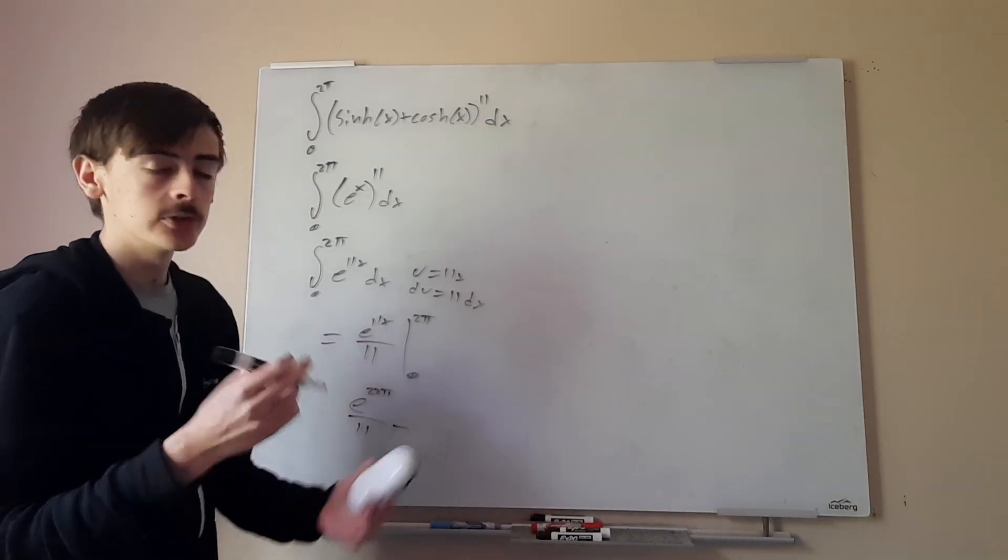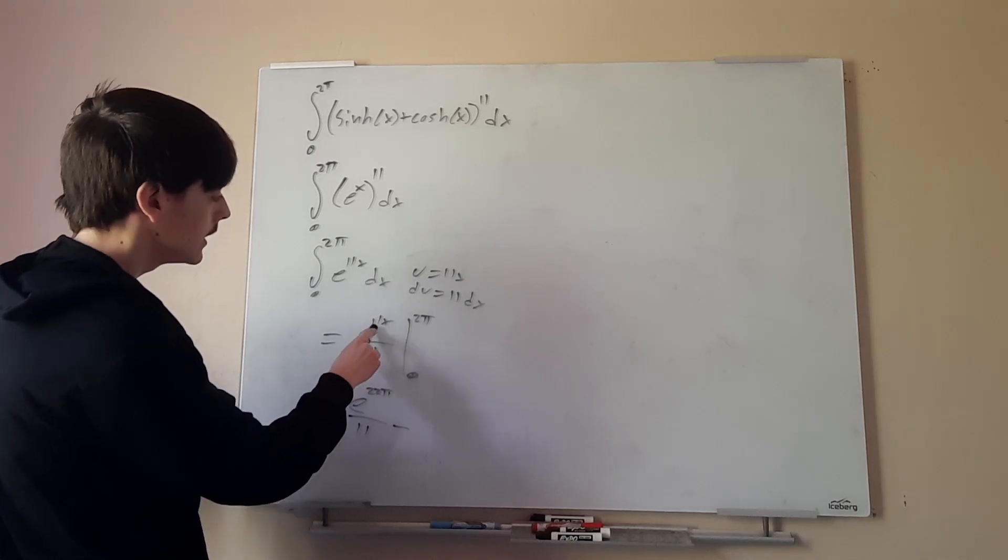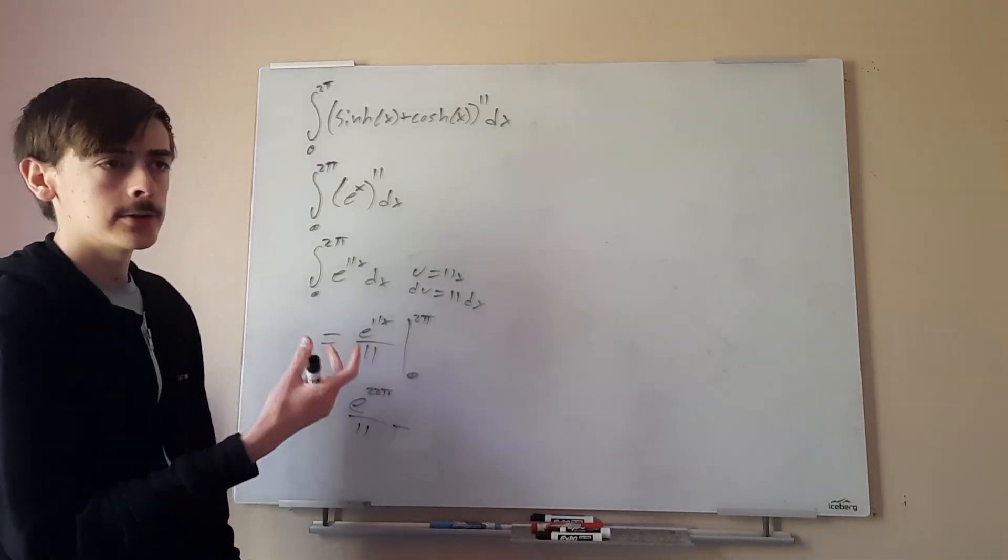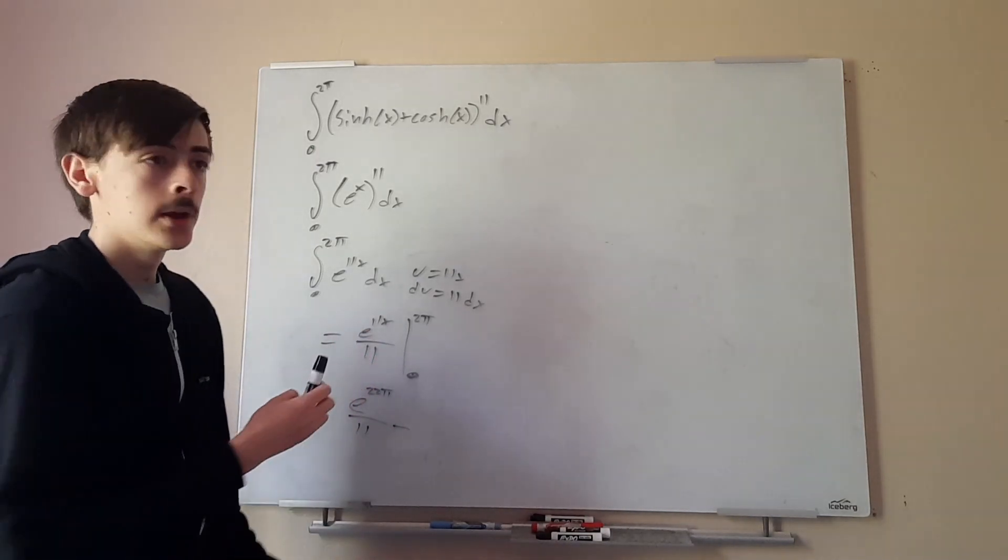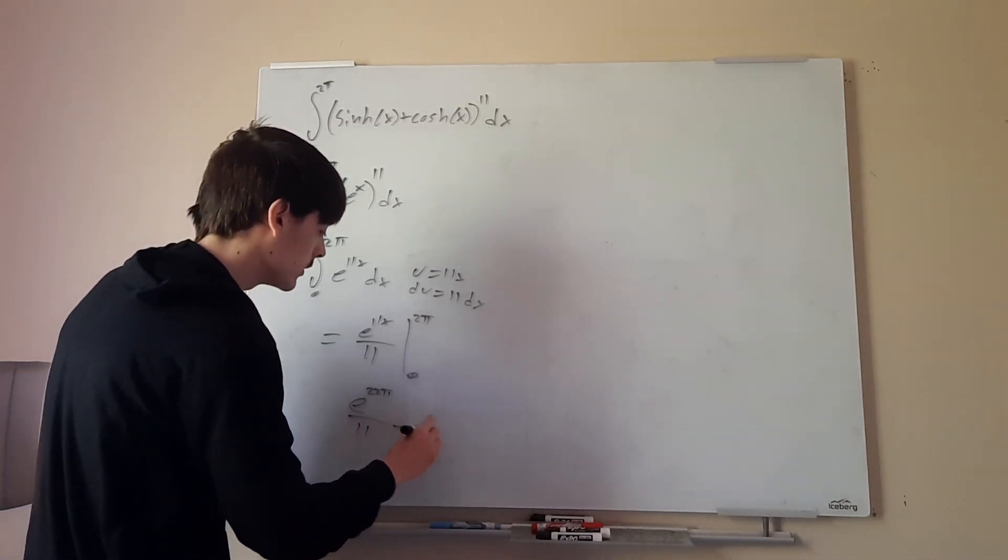A lot of times, if you just plug in 0, the whole term just cancels out. Not this time. So we will have e^(11 × 0). 11 × 0 is just 0, so we'll have e^0. But anything to the 0 is actually 1. So this will be minus 1/11.